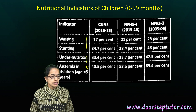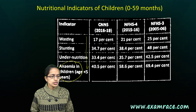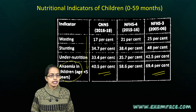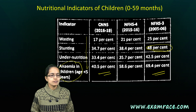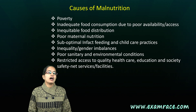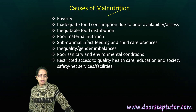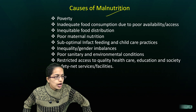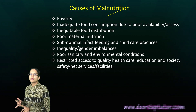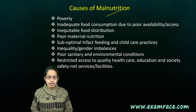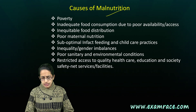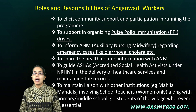The percentage of wasting and stunting data shows anemia proportion less than 5 is highest per statistics. Higher numbers are seen for stunting cases followed by undernutrition and then wasting. Causes of malnutrition include poverty, inadequate food consumption, improper distribution, poor maternal health, inadequate feeding of children, and gender imbalances.